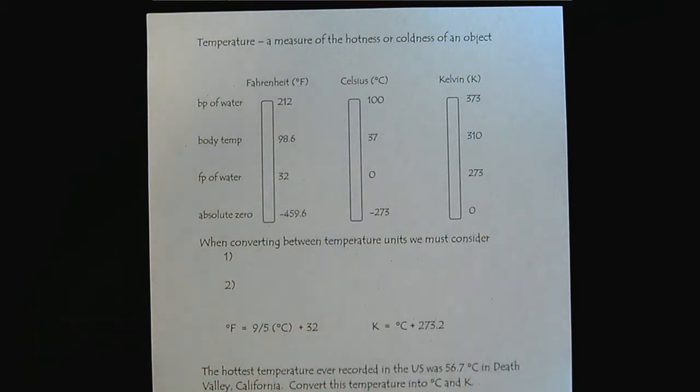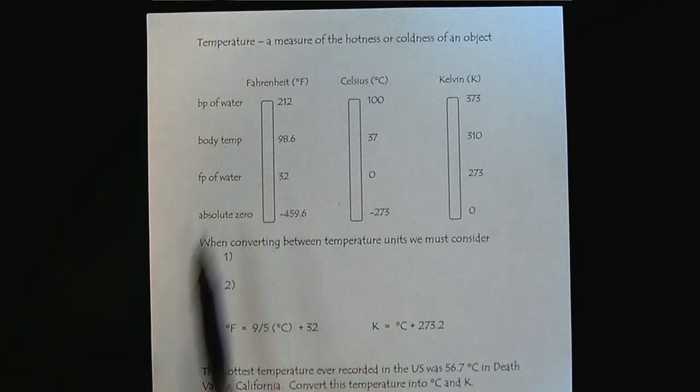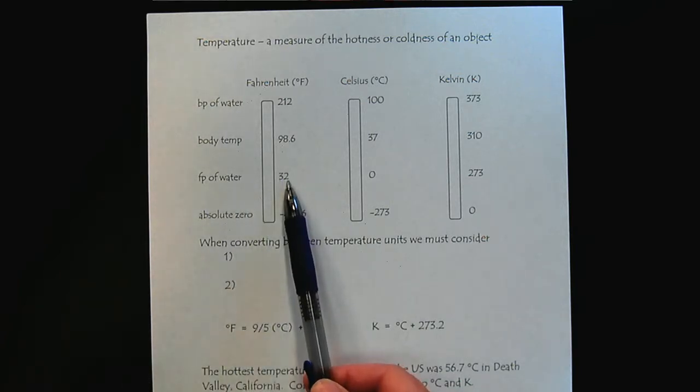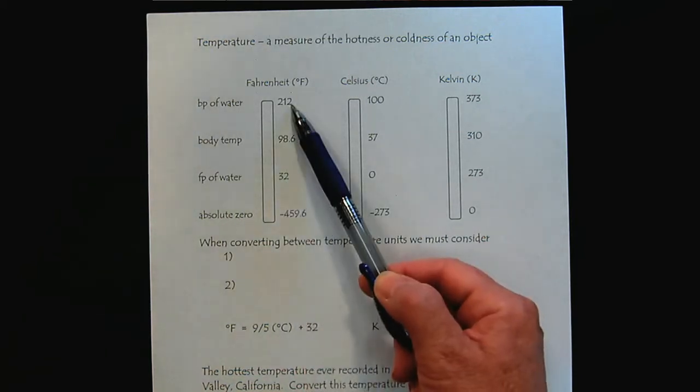This temperature scale is hundreds of years old. Fahrenheit was trying to pursue the range of temperatures possible and was able to go below the freezing point of water, which is why the freezing point of water ends up being 32 degrees. We also have body temperature and the boiling point of water.